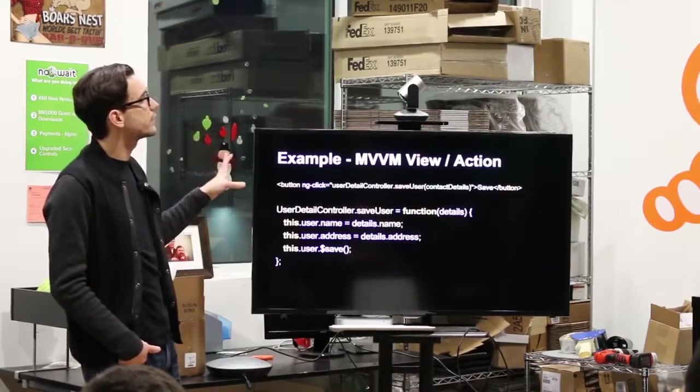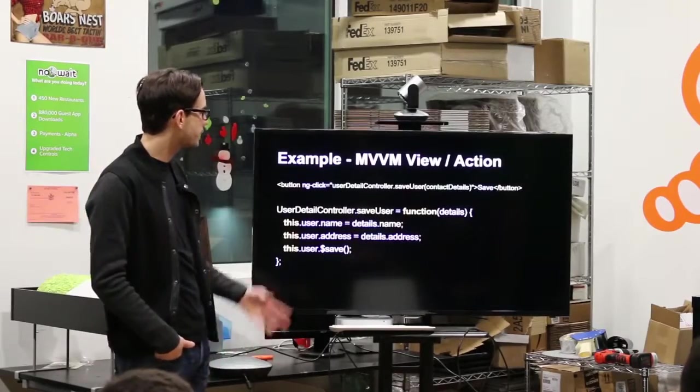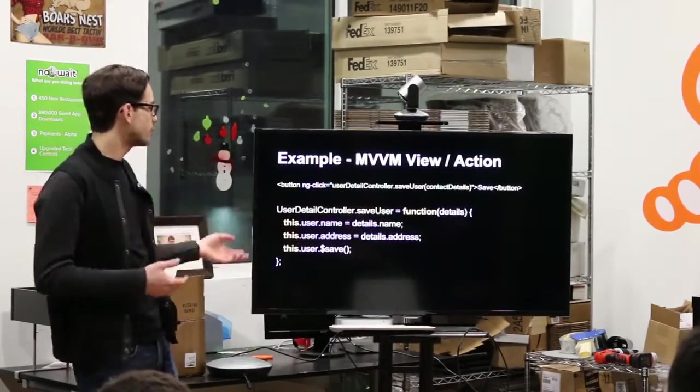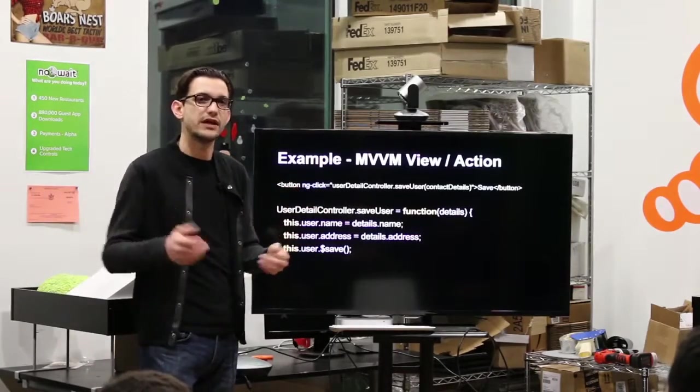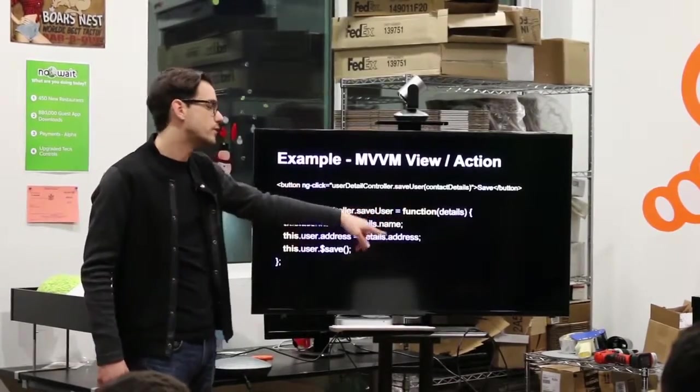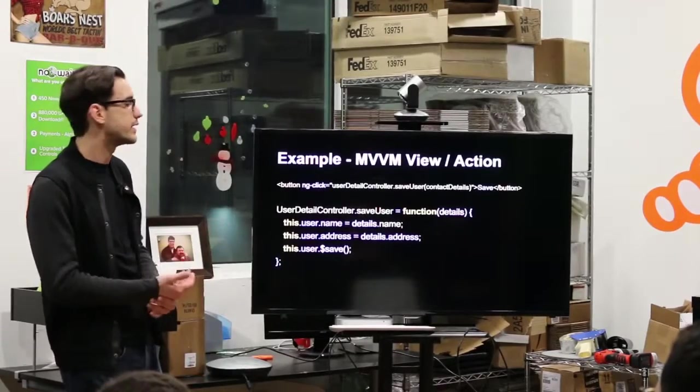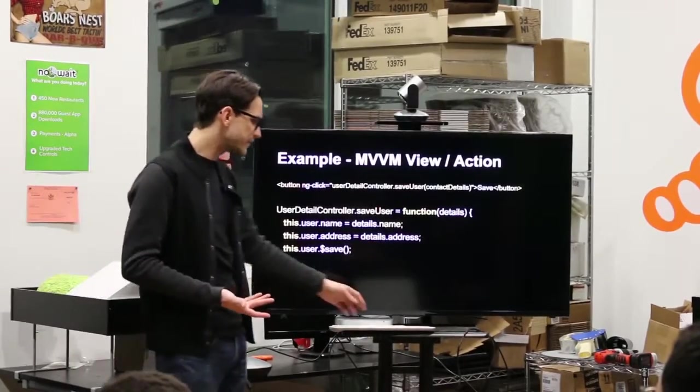If I'm going to save a user in the more MVVM pattern, you get the details and map that to your, let's say this user thing is what's called an Angular resource. You just hit save, and it'll send it back to the server. You need to map your details from your view back to this model, click save, and send it off to the server.